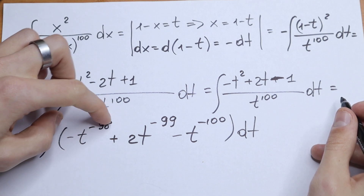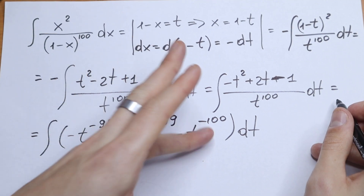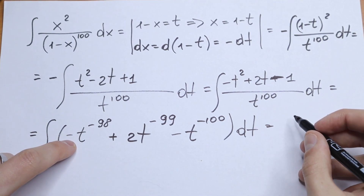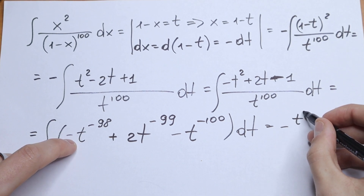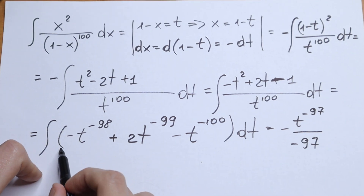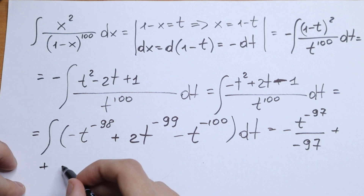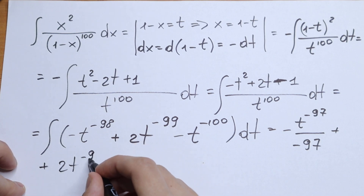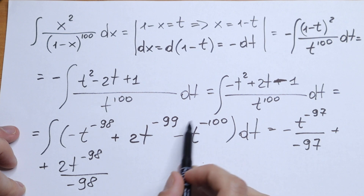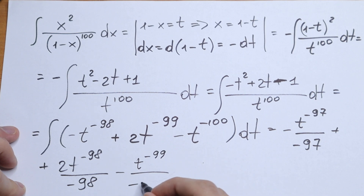As you can see, we have simple table cases — we have a power rule. We need to add one to the exponent and divide by that new exponent. So integrating term by term: the first term gives minus t to the power minus 97 divided by minus 97. The second gives plus 2t to the power minus 98 divided by minus 98. And the third gives minus t to the power minus 99 divided by minus 99.